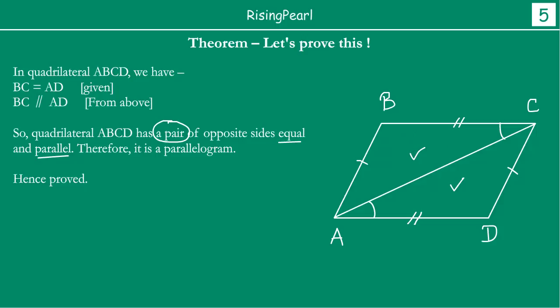We can prove it with just one pair: if we can prove one pair of opposite sides are equal and parallel, then we can immediately say the quadrilateral is a parallelogram. Alternatively, you can also show that both pairs of opposite sides are parallel — BC parallel to AD and AB parallel to CD — and conclude that quadrilateral ABCD is a parallelogram. Hopefully you are following along. If you have any questions, feel free to let us know and we will be happy to answer. Thank you for your time, see you on the next one.